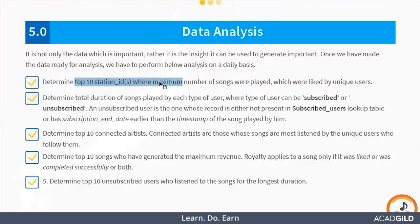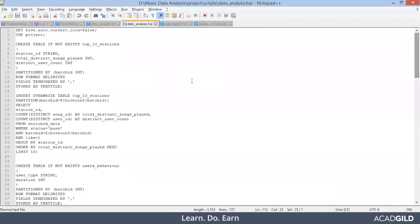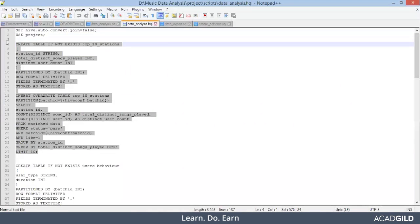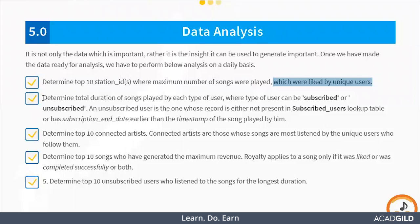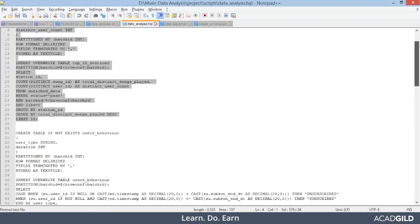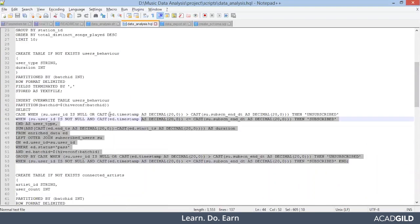For the first problem you need to determine the top ten station IDs where the maximum number of songs were played, which were liked by unique users — this highlighted query is the solution. For the next problem statement, determine the total duration of songs played by each type of user, where the type can be subscribed or unsubscribed. An unsubscribed user is one whose record is not present in the subscribe user lookup table or has a subscription end date earlier than the timestamp. This is that solution.